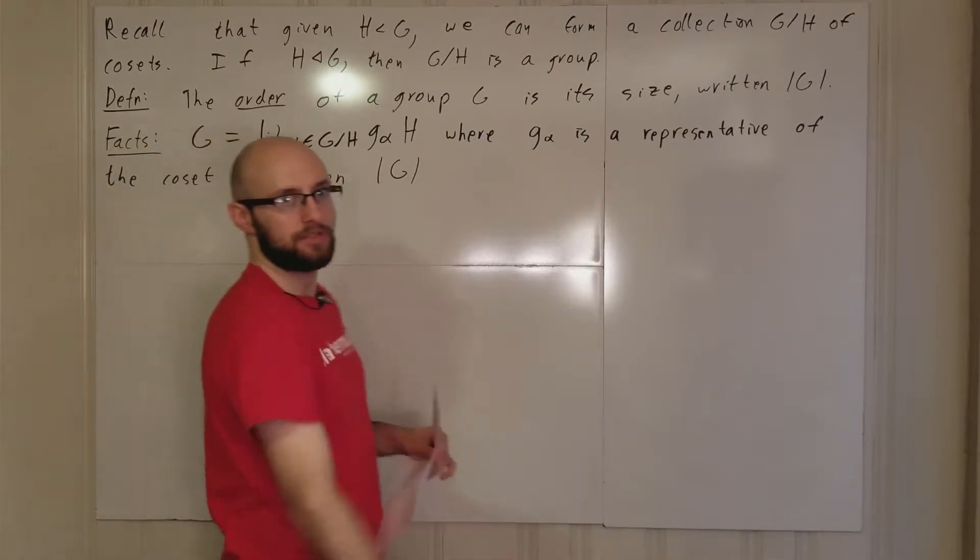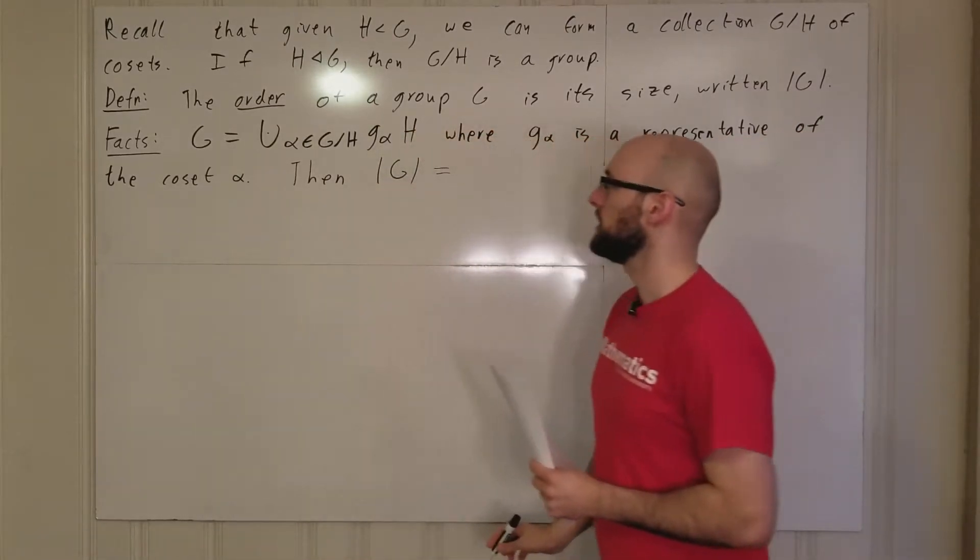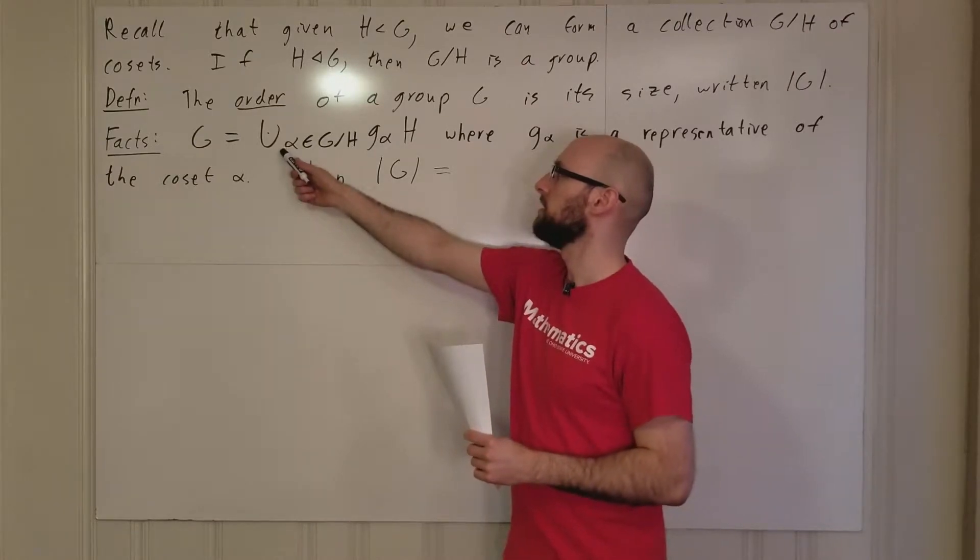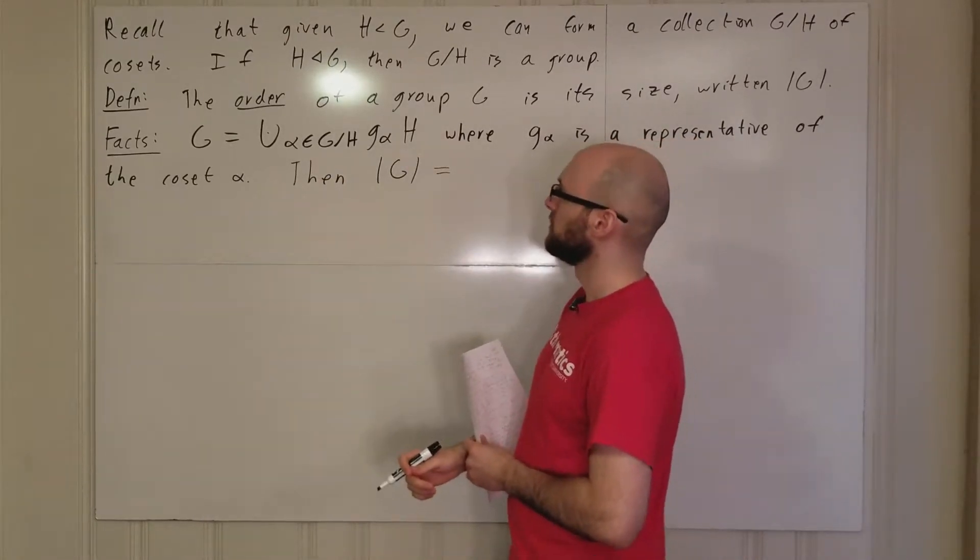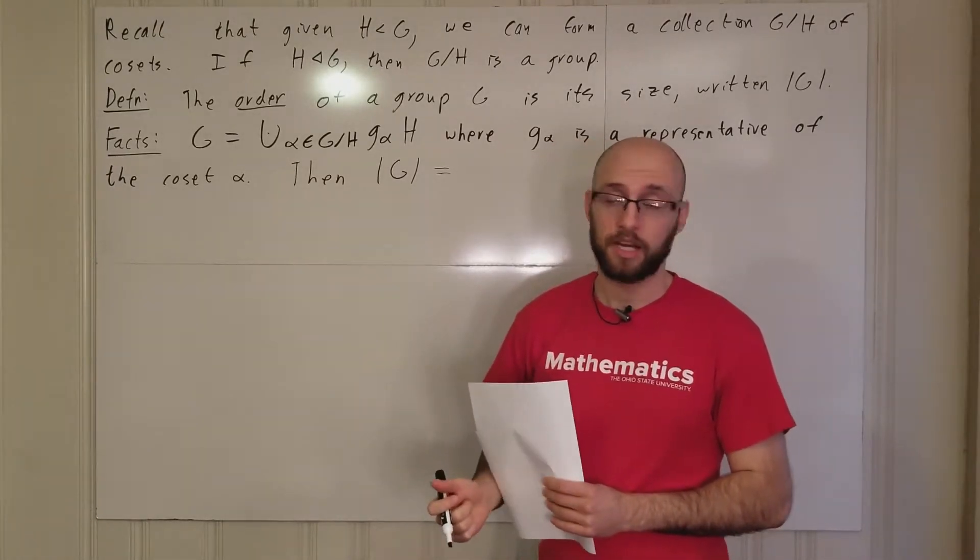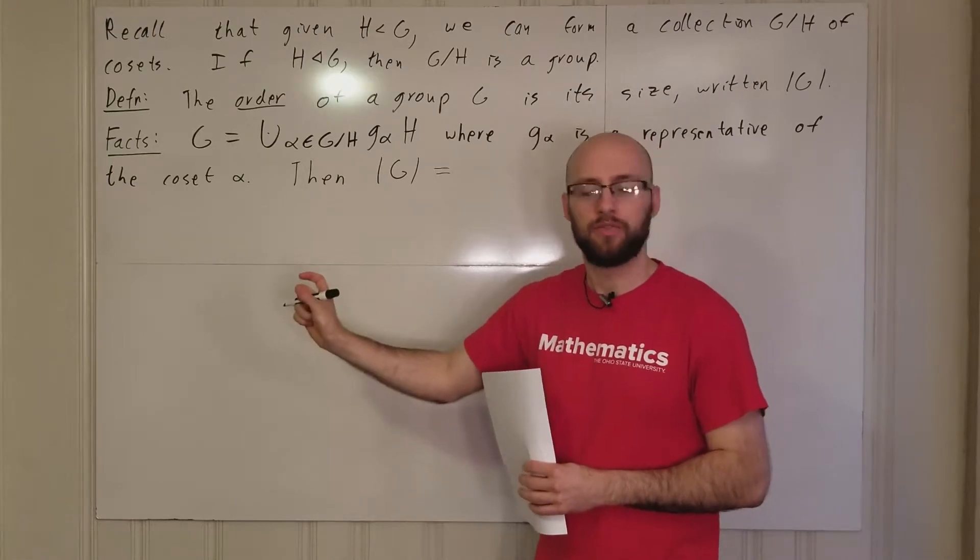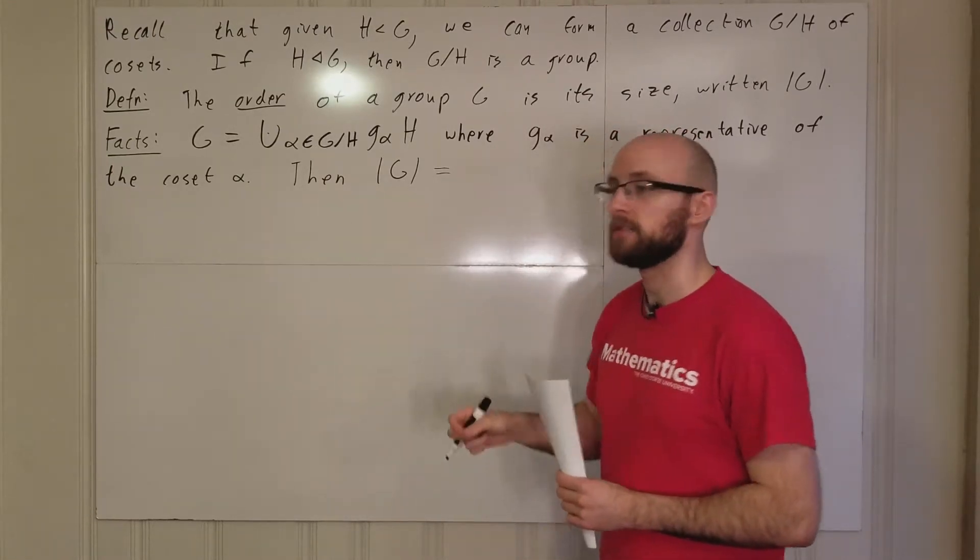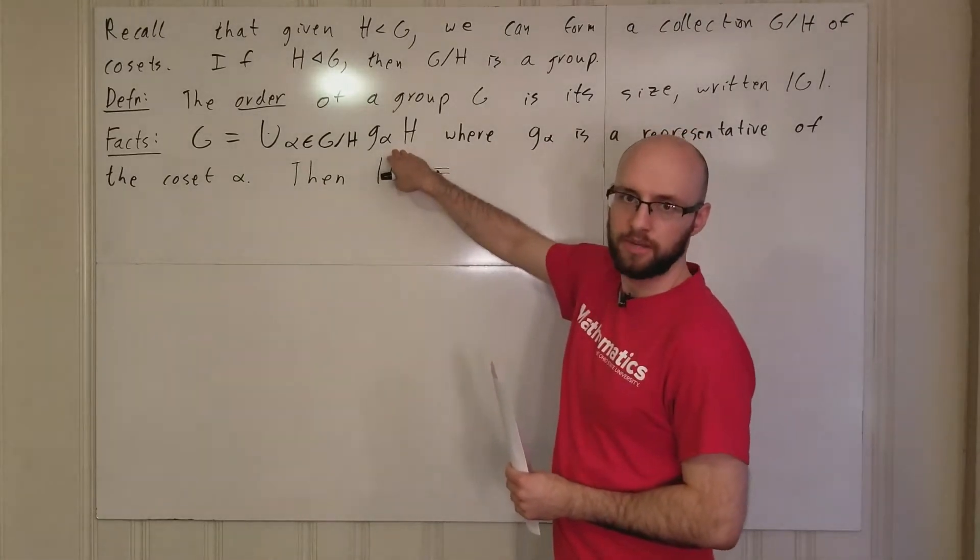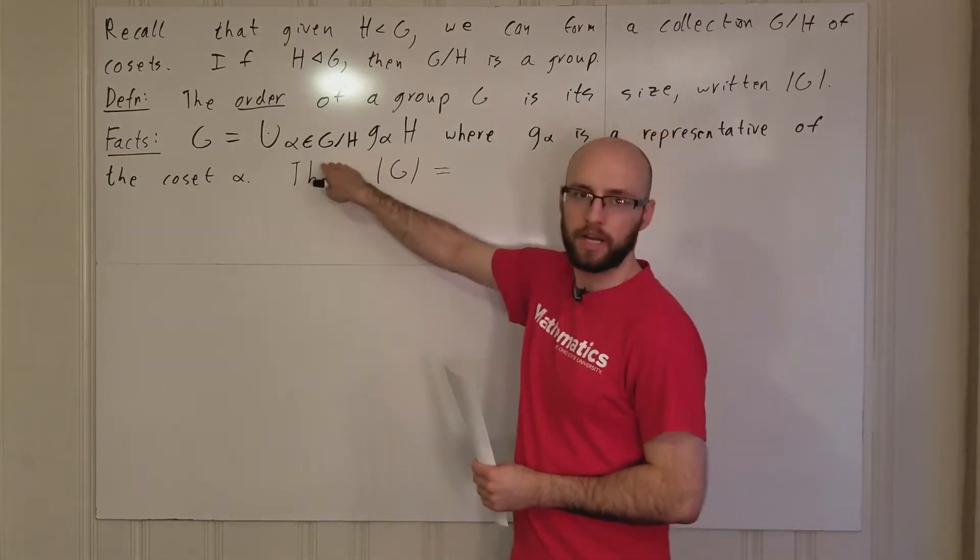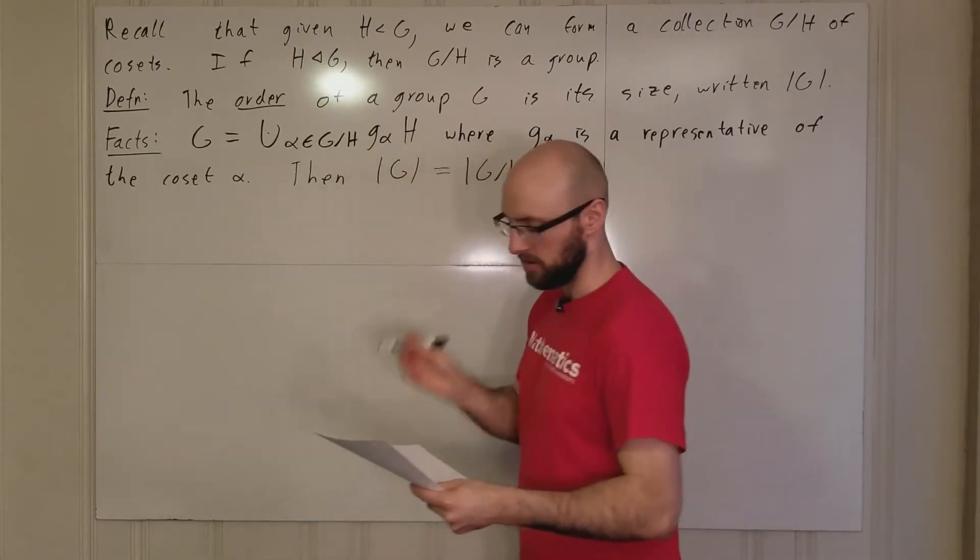If we put norms on both sides of this equation, the left side is just the norm of G. The right side—we're taking the union over all cosets in G/H of gαH. You can prove that each coset has the same size. The size of gαH is equal to the size of H for any single element g in G. Every coset has size |H|, and there's |G/H| of them, so this is |G/H| times |H|.